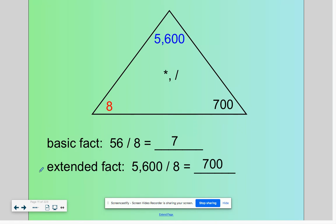So our final problem, if our basic fact of 56 divided by 8 equals 7, then 5600 divided by 8 is 700. Any reflection?